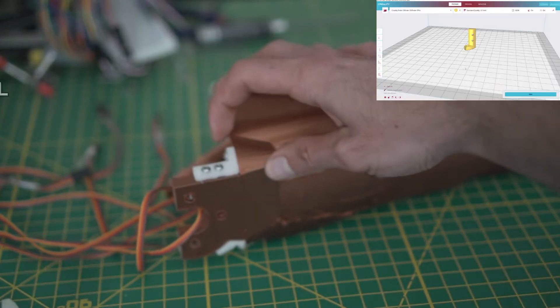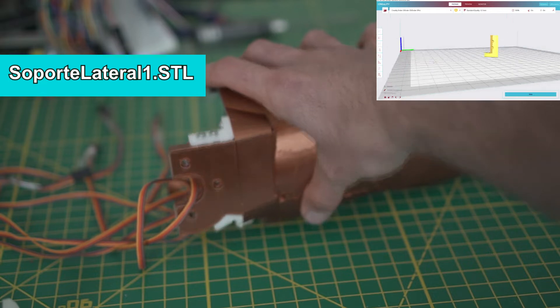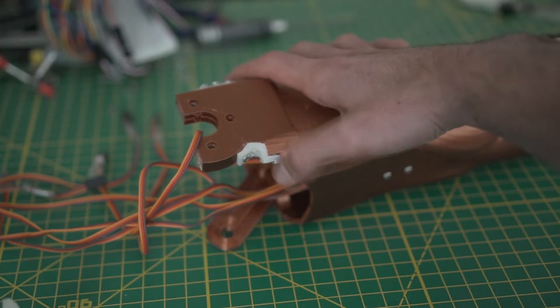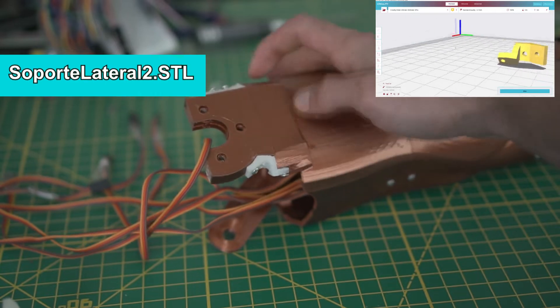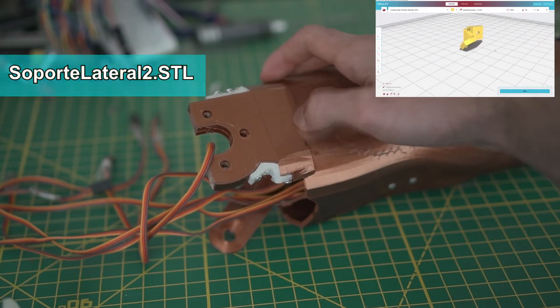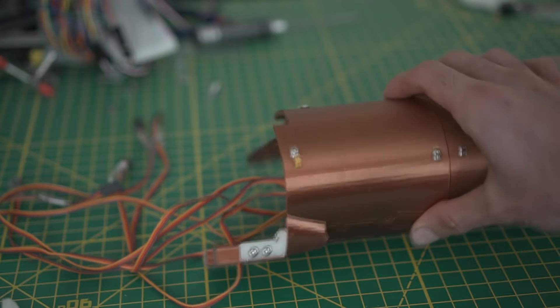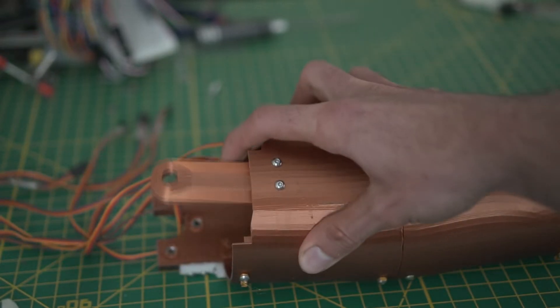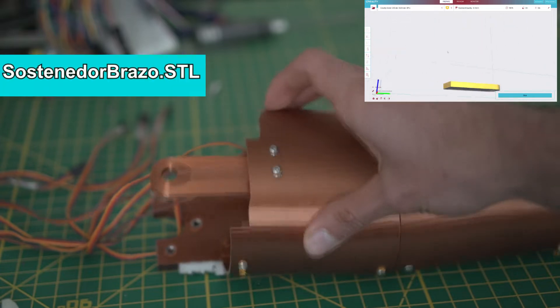We are also going to print this little support using nylon, and this other little piece that supports the entire arm.